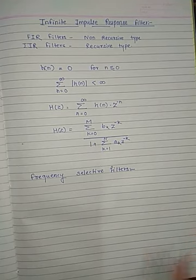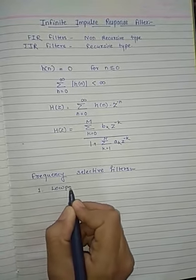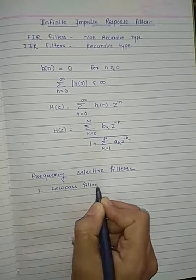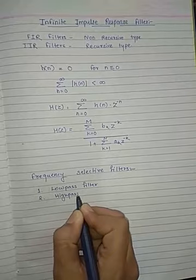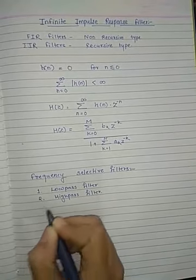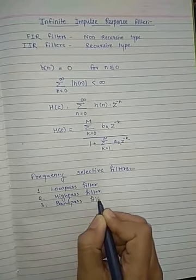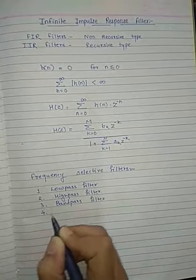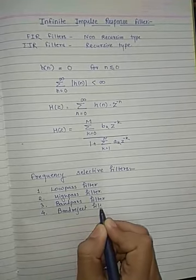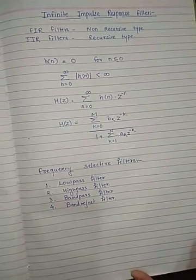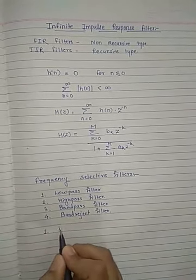Filters are of different types. The first one is the low pass filter, the second is the high pass filter, the third is the band pass filter, and the last one is the band reject filter. We will see each filter type one by one, starting with the low pass filter.